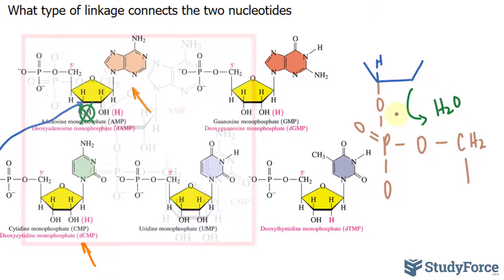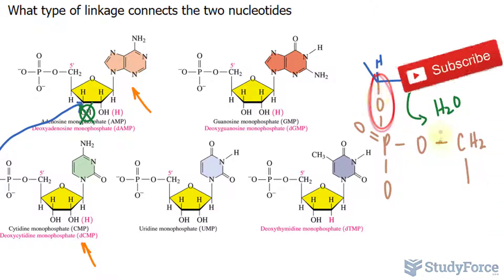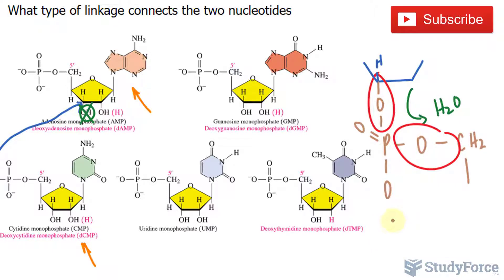Question B asks, what type of linkage connects these two nucleotides? So they're asking, what types of bonds are these? They're called ester bonds. We have two of them, so we call it diester. And this phosphate accounts for the name phosphodiester bond.